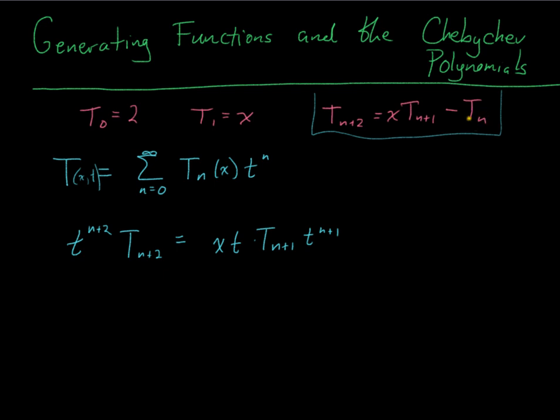So all together, I'm still just multiplying this guy by t^(n+2). Same thing, this guy really only wants t^n, so I'm going to break off the extra t², and then have Tₙ·t^n.